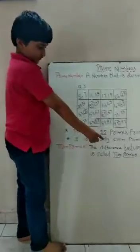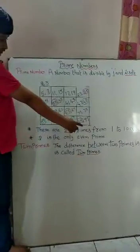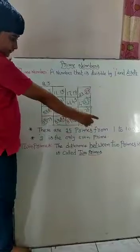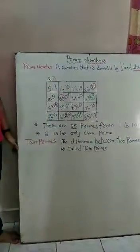Now we discuss about twin primes. The difference between two primes is 2. This is called twin primes.